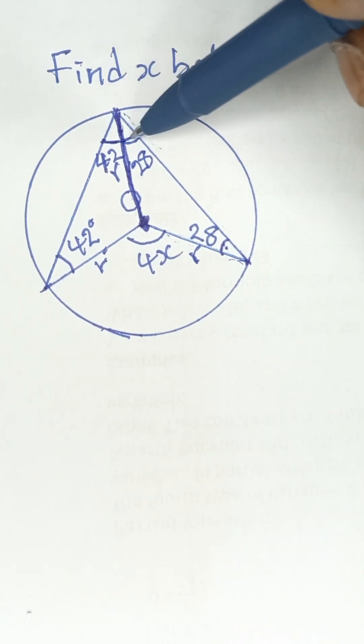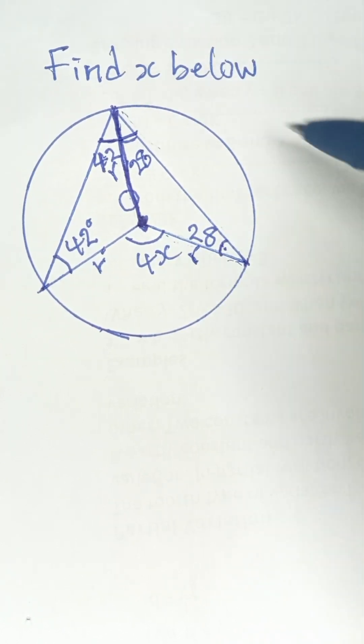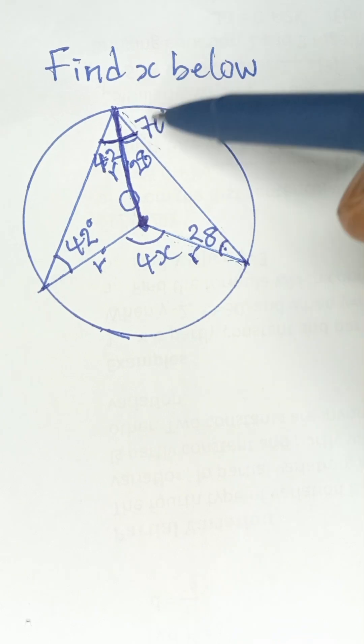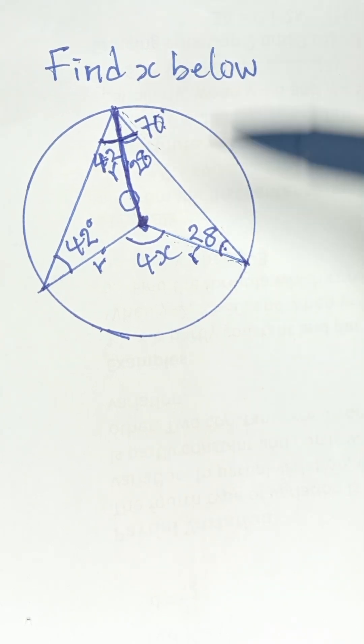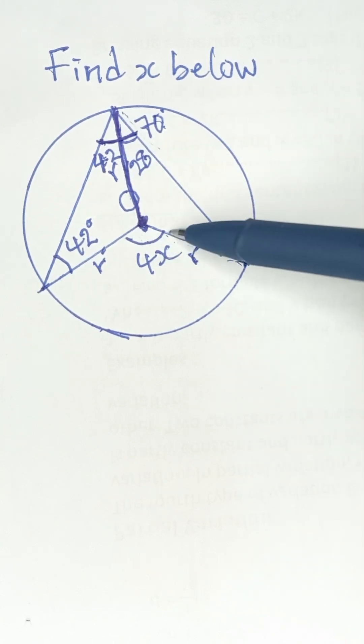That means the full angle here will be 42 plus 28, and 42 plus 28 is going to give us 70 degrees. So this total angle here is 70 degrees.